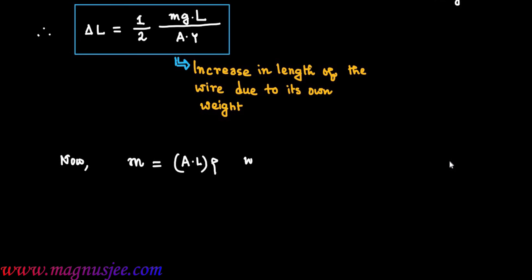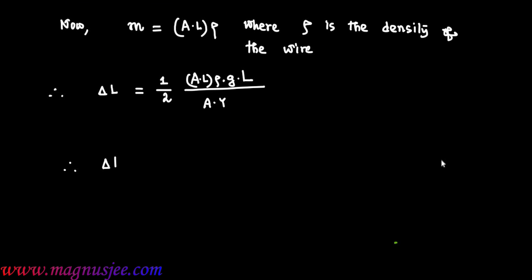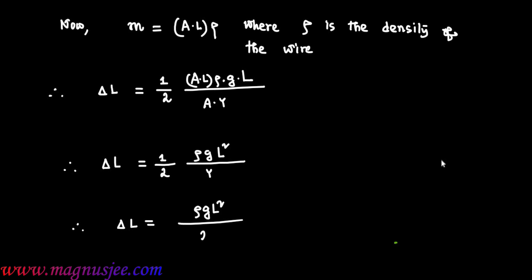Now M equals A dot L into rho, where A dot L is the volume of the wire and rho is the density of the material of the wire. Putting the expression of mass M: Delta L equals (1/2) times A dot L dot rho dot g dot L divided by A dot Y. Simplifying, Delta L equals (1/2) rho g L squared divided by Y, or Delta L equals rho g L squared divided by 2Y.